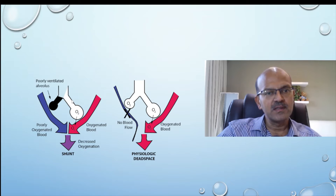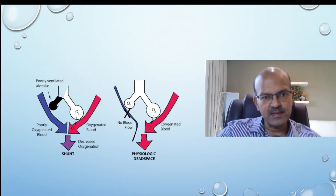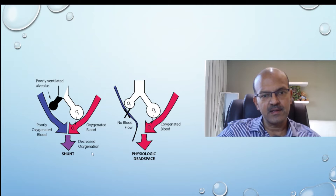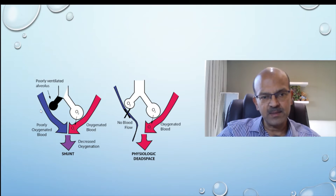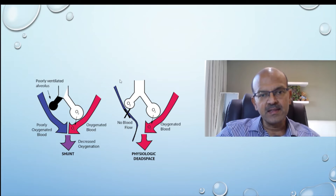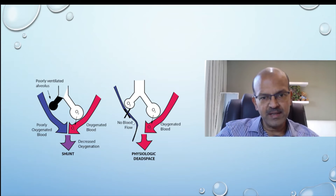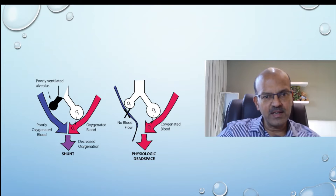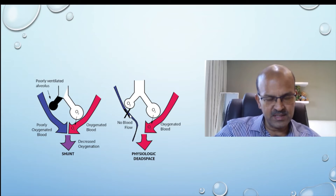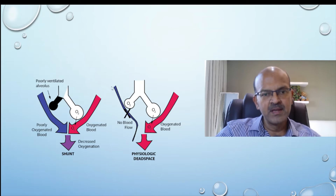In an alveolus that is not ventilated, there is no gas exchange happening, so the blood coming through is poorly oxygenated and then mixes with better oxygenated blood. This is a right-to-left intrapulmonary shunt. This can occur due to a congenital anomaly, obstruction of the blood vessel, or relative local hypoxia causing reflex vasoconstriction, as happens with PPHN.